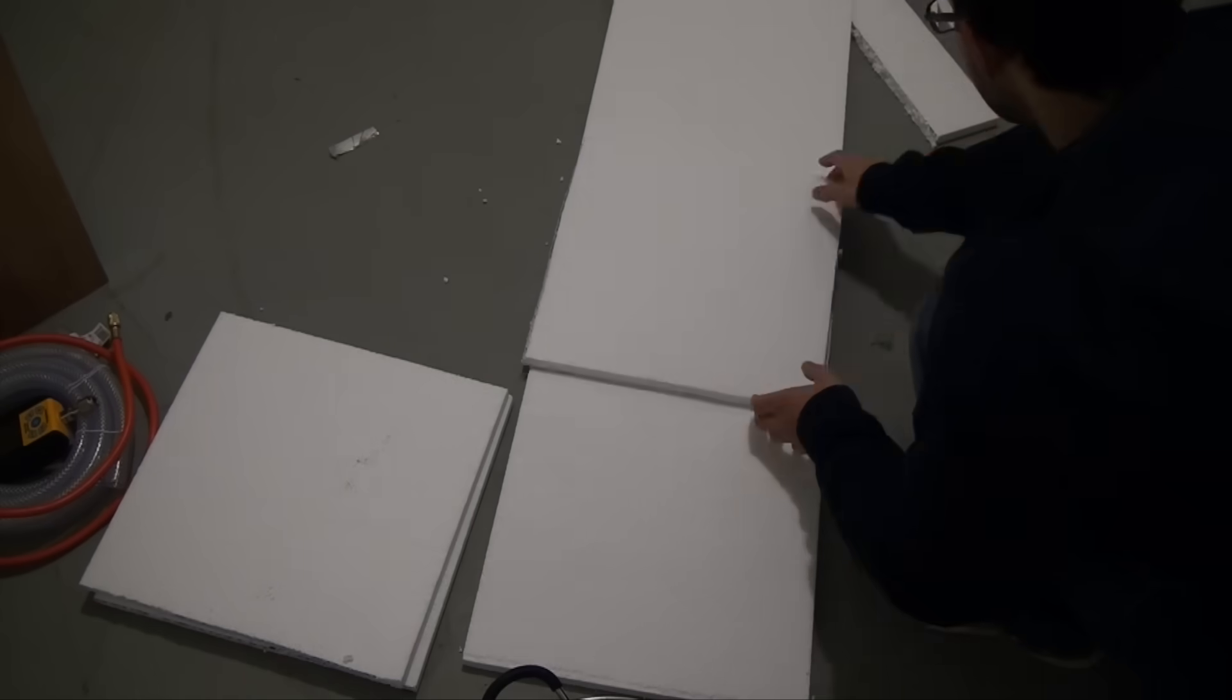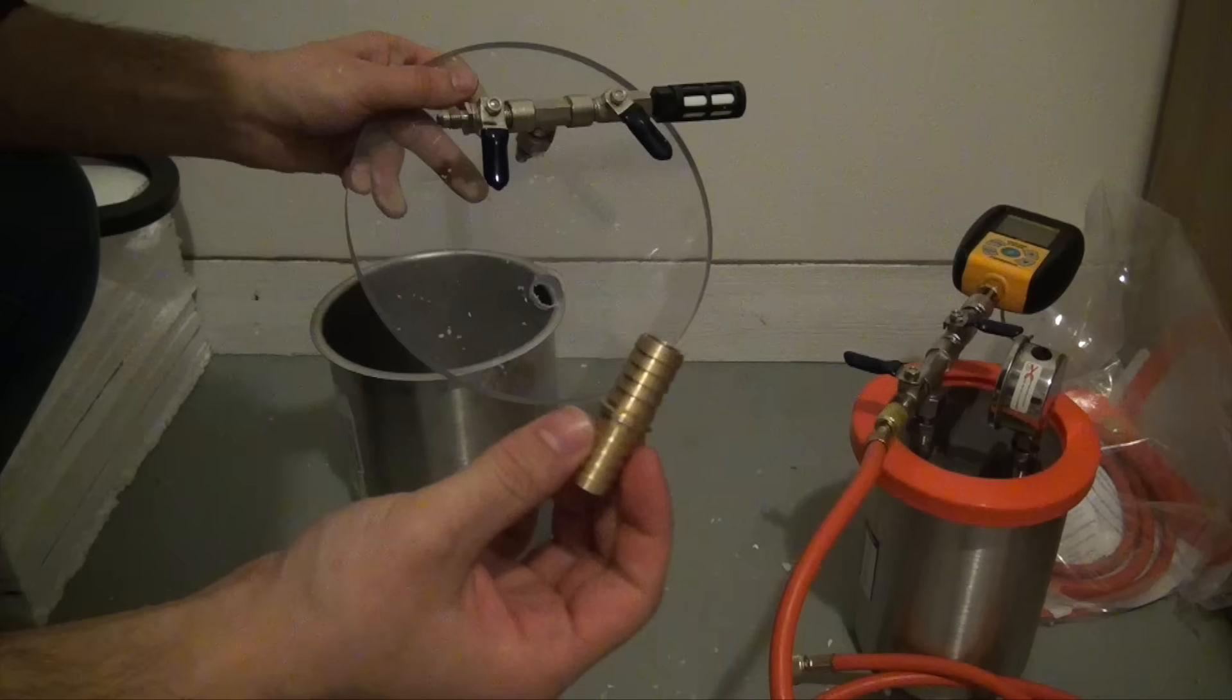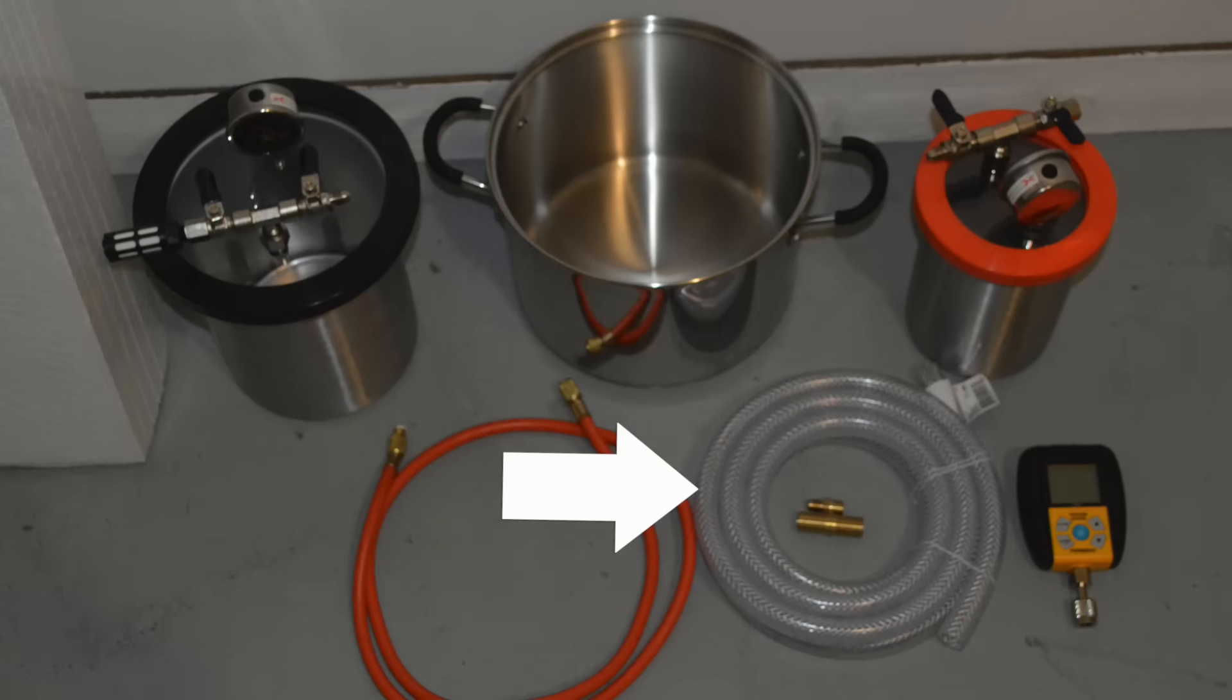To insulate everything, I got some styrofoam sheets. The chambers come with almost all of the plumbing we need, which is one of the reasons I chose them, but to make them fully functional, we'll need a one quarter inch union, a five eighths inch splicer barb, and some five eighths inch tubing with braided reinforcement.